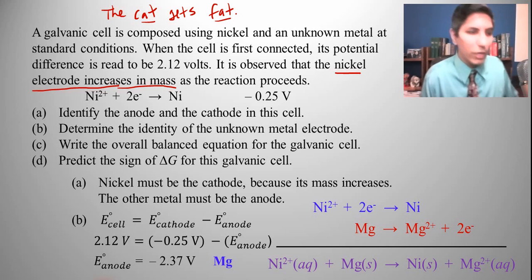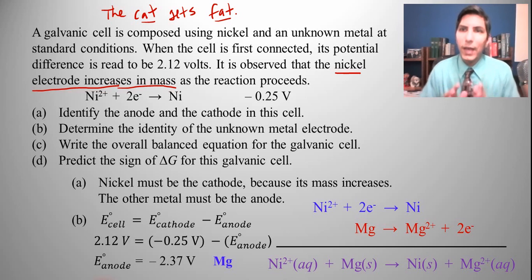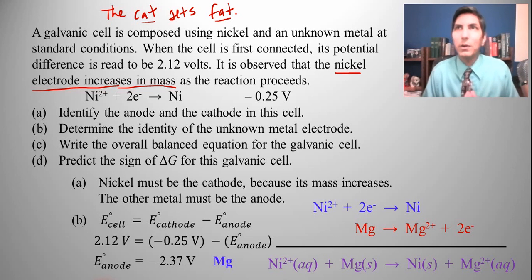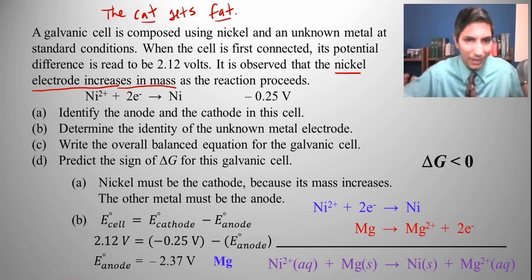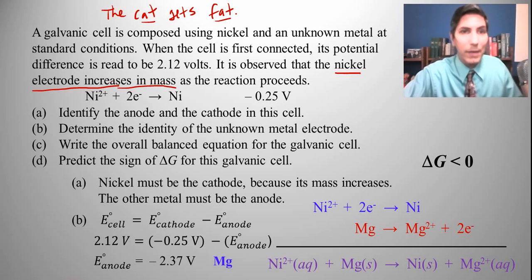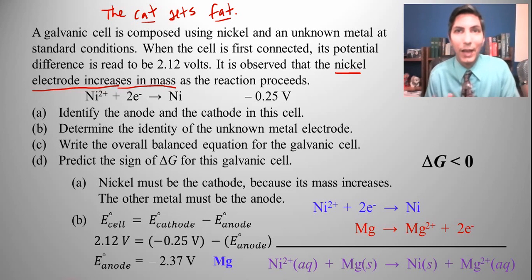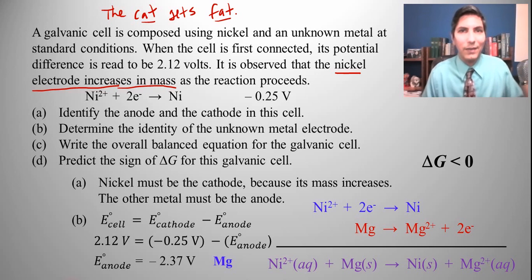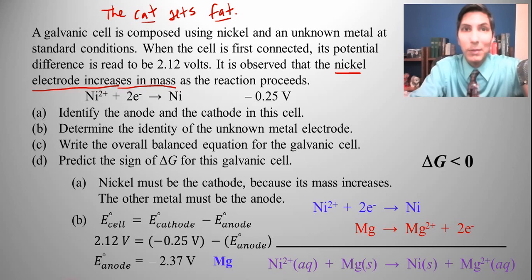For part D — predict the sign of delta G — every galvanic cell has to be thermodynamically favored, otherwise it won't run. That means delta G has to be negative. Every galvanic cell has a negative delta G, meaning it is thermodynamically favored. I hope you learned something from this video about galvanic cells and the mathematics behind them. Give me a thumbs up if you did, subscribe to my channel — I've been teaching chemistry for multiple decades and I want you to get a five on the AP exam.